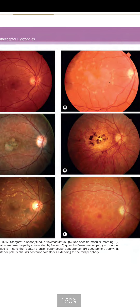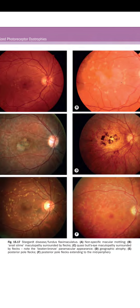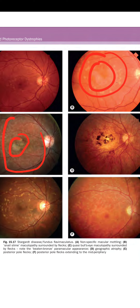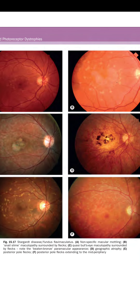Figure 15.17: (a) shows non-specific macular mottling; (b) shows snail slime maculopathy surrounded by flecks; (c) shows quasi bull's eye maculopathy surrounded by flecks with a beaten bronze paramacular appearance; (d) shows geographic atrophy; (e) shows posterior pole flecks; and (f) shows posterior pole flecks extending to the mid-periphery.